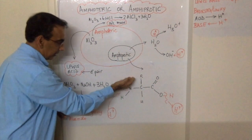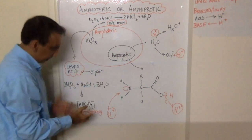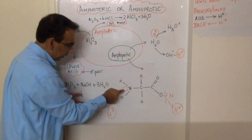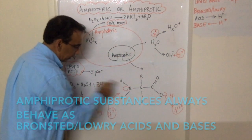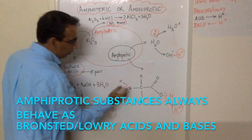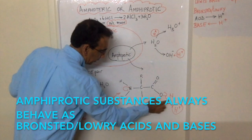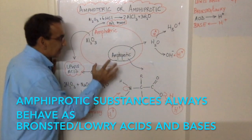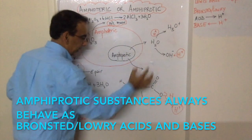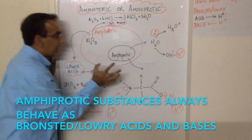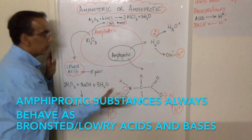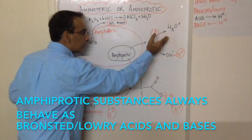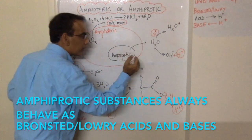Similarly, amino acids, like this general amino acid here, can accept a proton with its nitrogen, or it can donate a proton from this OH. So this makes water and an amino acid amphiprotic substances, able to behave as proton donors or proton acceptors.